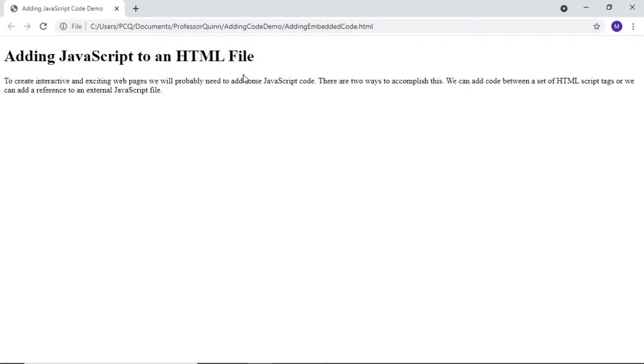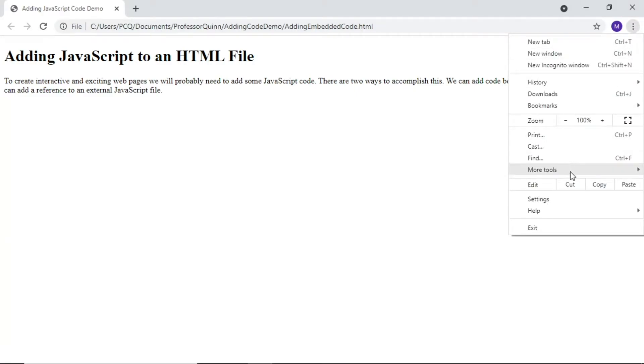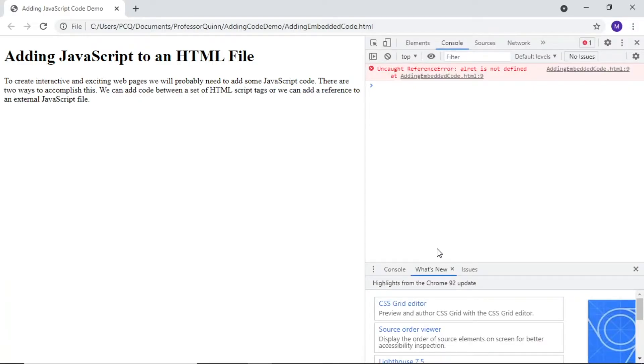Since we're working in the Chrome browser on a PC with the Windows operating system, we can either select the three dots of the kebab menu, then choose More Tools and Developer Tools, or we can type Control, Shift, and I.